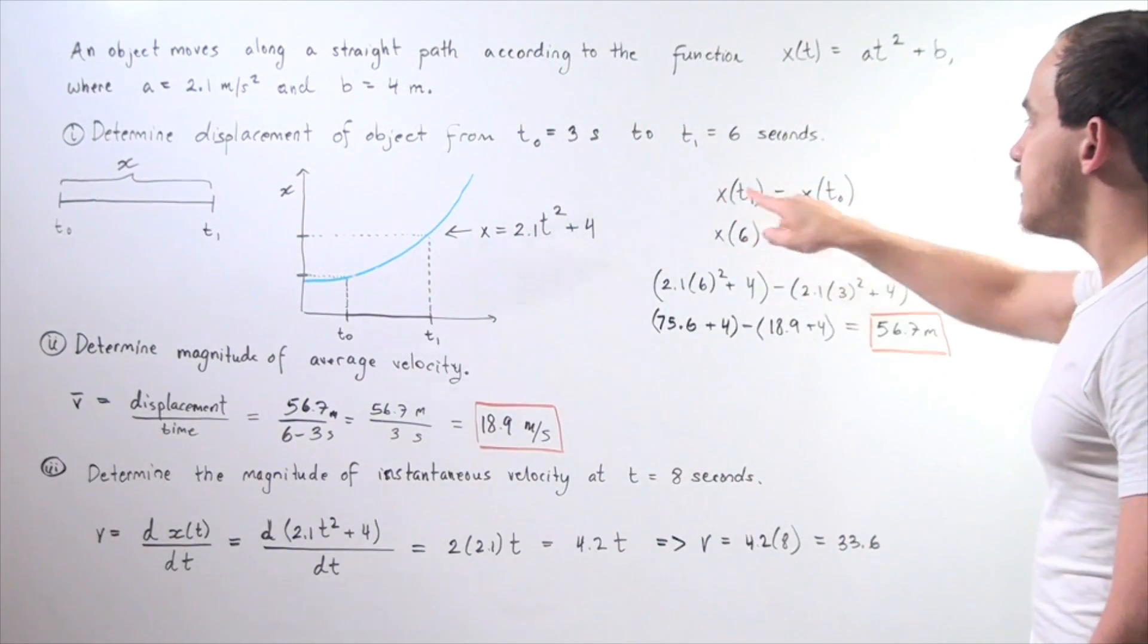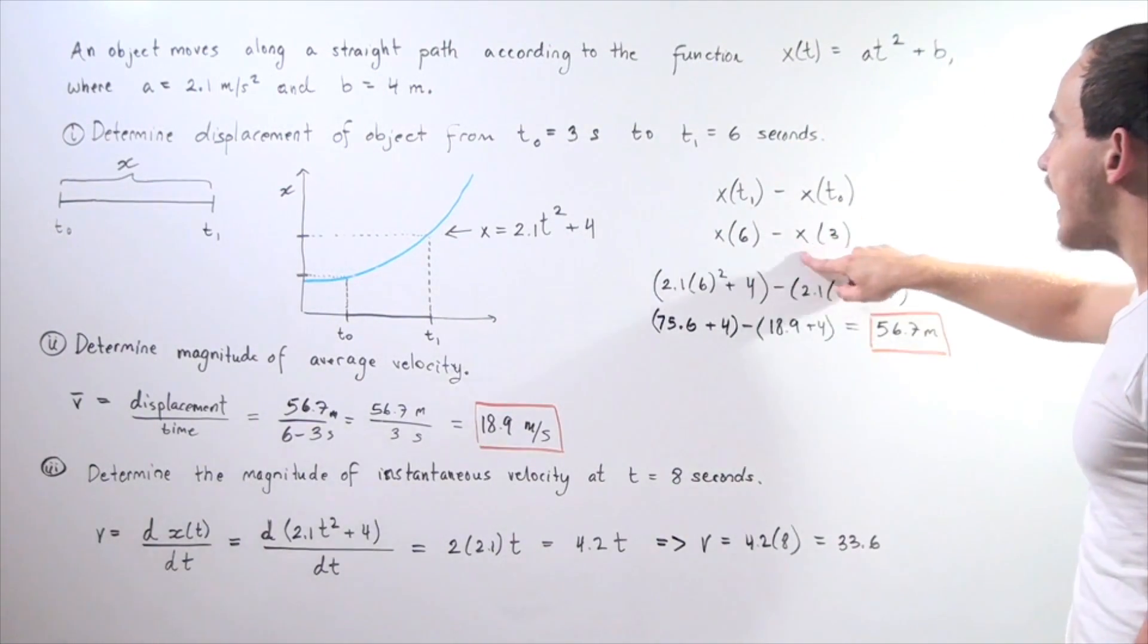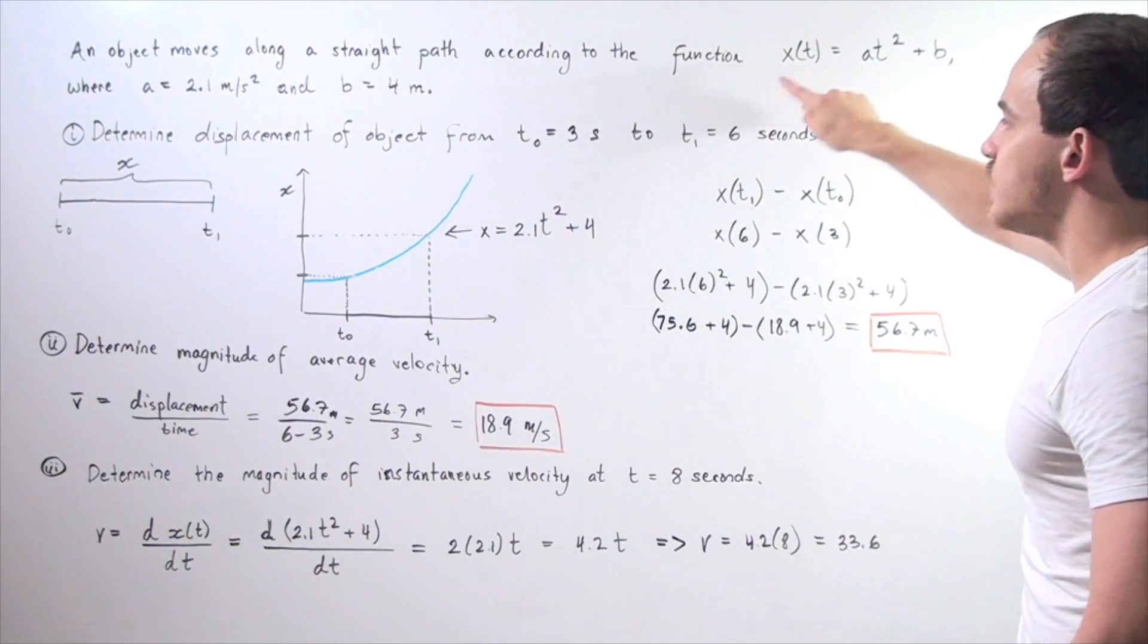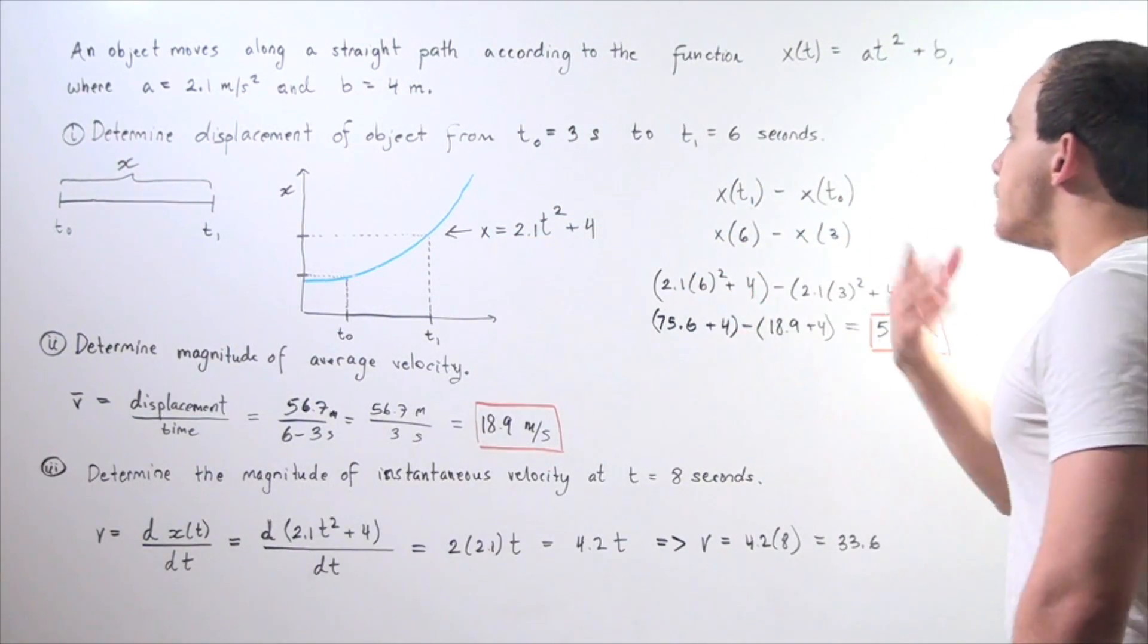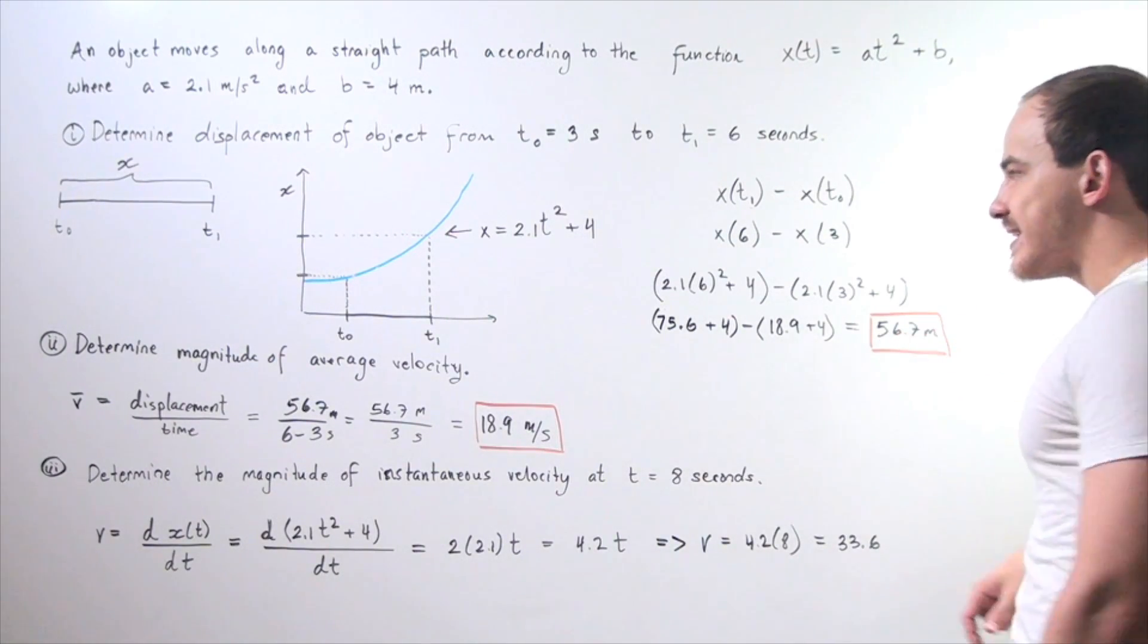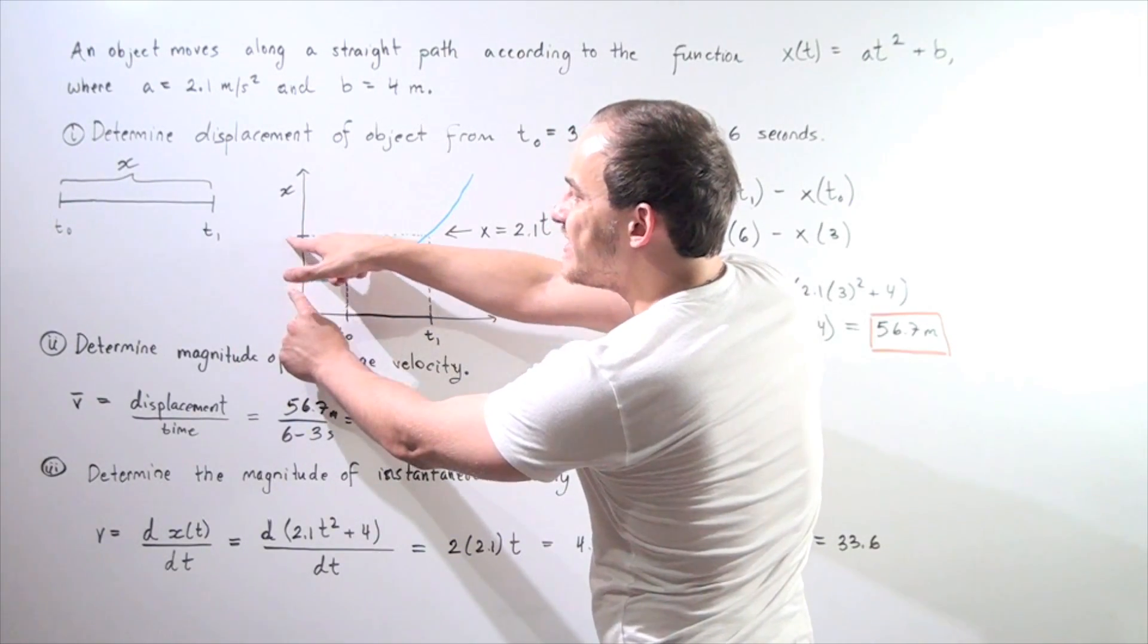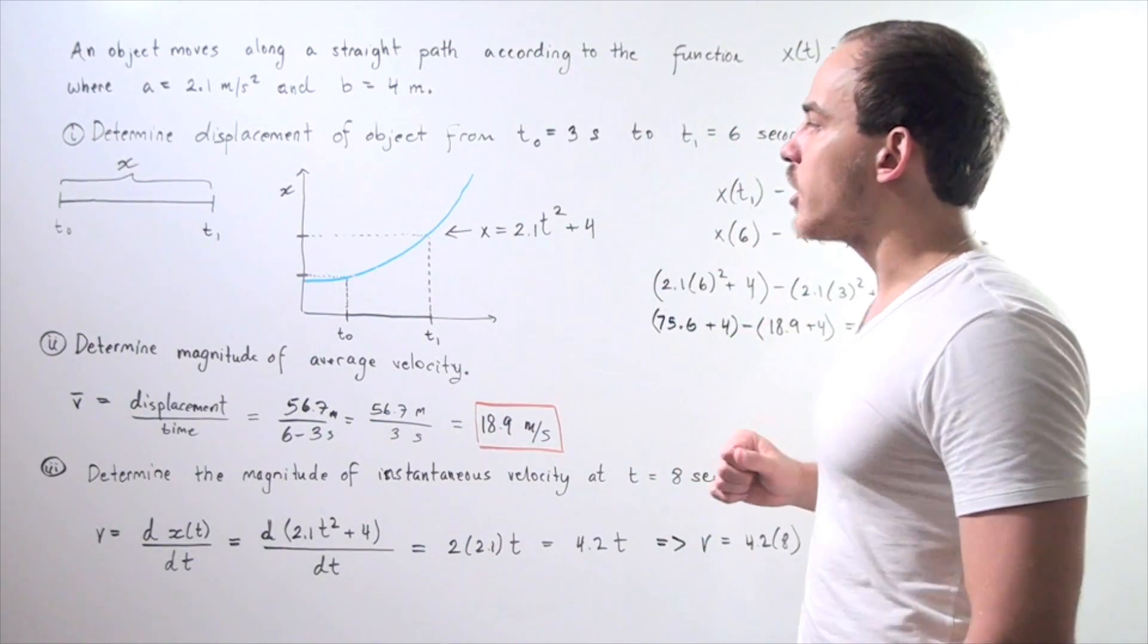x(t₁) - x(t₀), so x(6) - x(3). We take 6 and plug it into our equation: 6² is 36 times 2.1 plus 4, minus 2.1 times 3² which is 9, plus 4. We subtract the two and find that our displacement is 56.7 meters. That concludes part i.